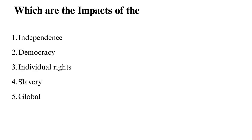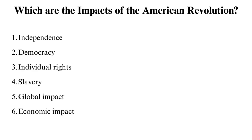Which are the impacts of the American Revolution? The American Revolution significantly affected the United States and the world, shaping the course of history in many ways. Independence: the colonists won the great battles between the Continental Army and the British. They began by electing officials and forming the First Continental Congress, which brought unity. They declared their independence in the Second Continental Congress and became a free nation.